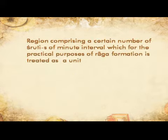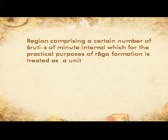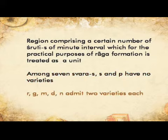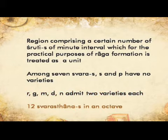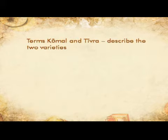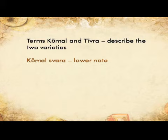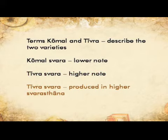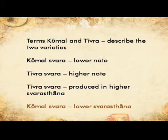Swarasthana: This is a region comprising a certain number of Shrutis of minute interval, which, for the practical purposes of Raga formation, is treated as a unit. Of the seven swaras, the notes Sa and Pa do not admit of varieties. The remaining five swaras — Ri, Ga, Ma, Dha, and Ni — admit of two varieties each. Thus, there are twelve Swarasthanas in an octave. The terms Komal and Teivra are used to describe these two varieties. Komal swara is the lower note and Teivra swara is the higher note. The Teivra swara is produced in the higher Swarasthana and the Komal swara on the next lower Swarasthana.